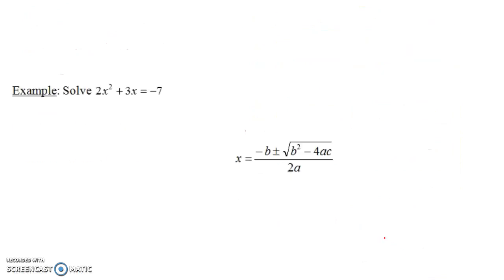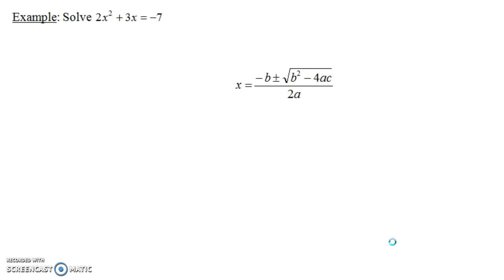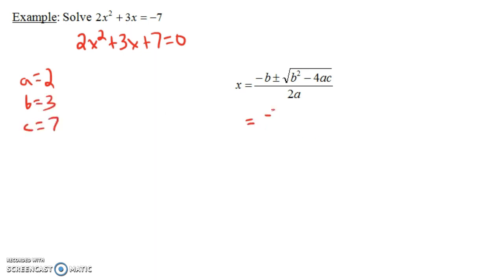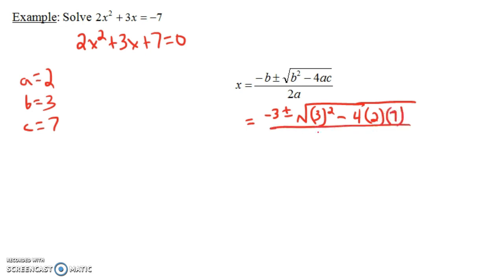Let's do one more example — this one will involve imaginary numbers. We have 2x squared plus 3x minus 7 equals 0. Wait — adding 7 to both sides gives 2x squared plus 3x plus 7 equals 0. So a equals 2, b equals 3, and c equals 7. Plugging into the quadratic formula: negative 3 plus or minus the square root of 3 squared minus 4 times 2 times 7, all over 2 times 2. That gives negative 3 plus or minus the square root of 9 minus 56, all over 4.